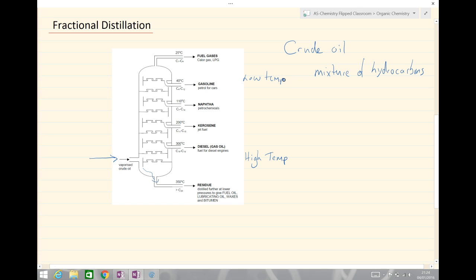As the gases pass up through the column, they then cool at different temperatures, they condense, and depending on their boiling point, will condense at different parts of the column.